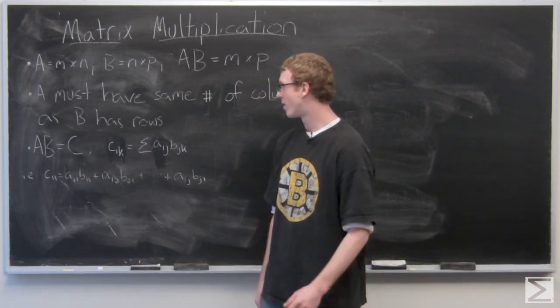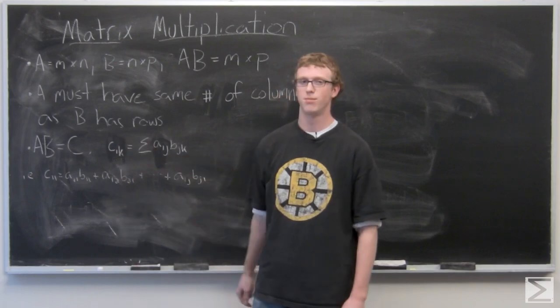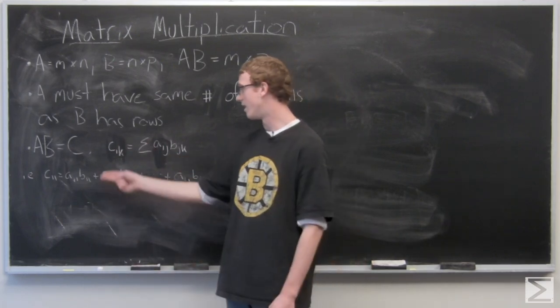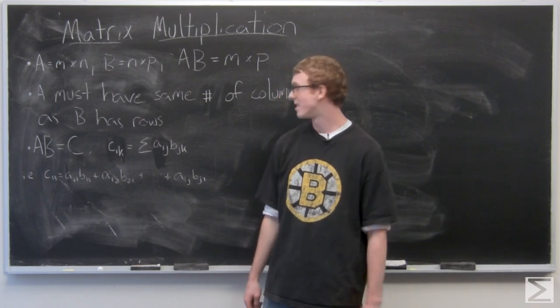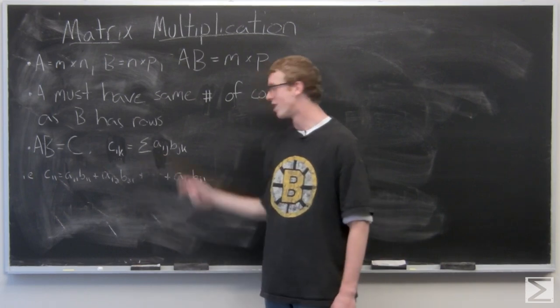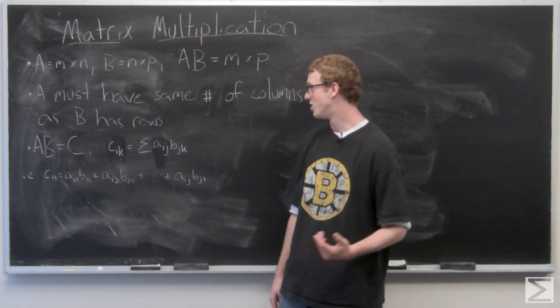We'll take a look at some examples momentarily. We have AB equals the resultant matrix C and the components of C we've denoted at CIK is going to be the sum of AIJ times the entry BJK.